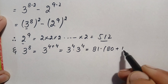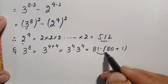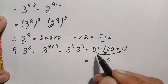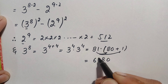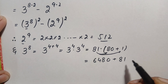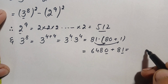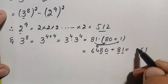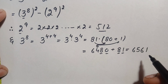To multiply 81 times 81, we write the second 81 as 80 plus 1. First, 81 times 80: 81 times 0 is 0, 81 times 8 is 648, so 81 times 80 is 6480. Then 81 times 1 is 81. Adding 6480 plus 81: 0 plus 1 is 1, 8 plus 8 is 16 carry 1, 4 plus 1 plus 1 is 6, giving 6561. So 3^8 is 6561.